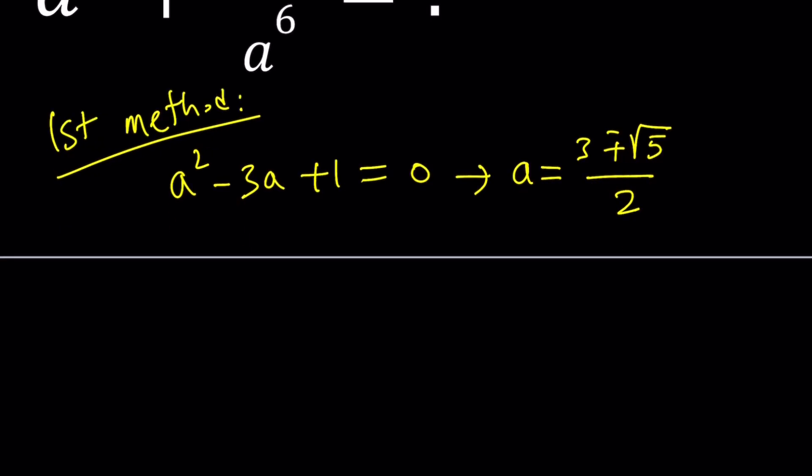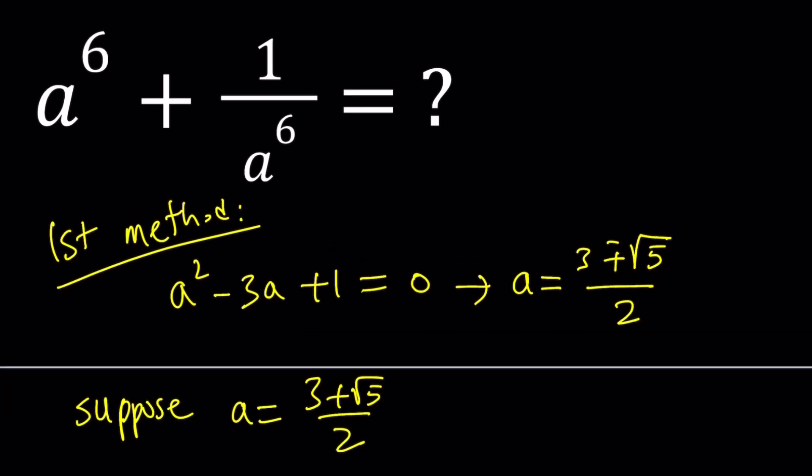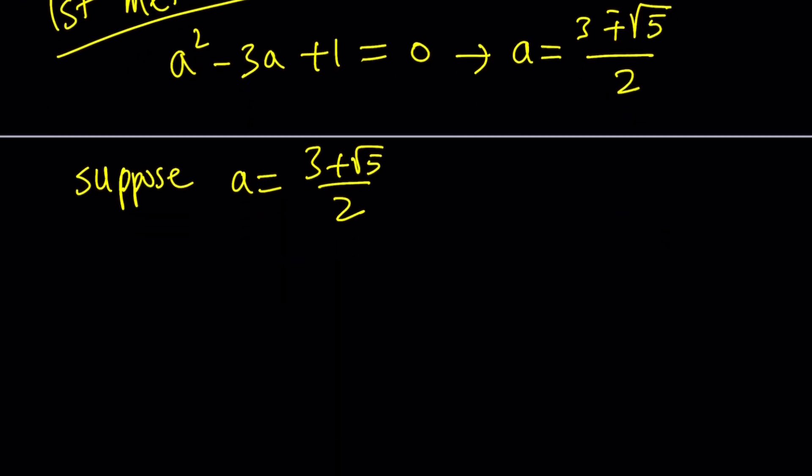So let's suppose now, which solution should we go with? It shouldn't matter. Suppose a is equal to 3 plus root 5 over 2. Now, we can go ahead and raise this to the 6th power, because we do need a to the 6th plus 1 over a to the 6th, but finding 1 over a to the 6th is easy. Once we have that, we're just going to add the reciprocal.